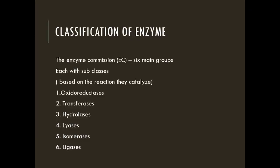In this video, we discuss the classification of enzymes. The enzyme commission divides enzymes into six main groups, each with different subclasses based on the type of reaction they catalyze. Each enzyme is assigned a four-part classification number and a systematic name which identifies the reaction it catalyzes.